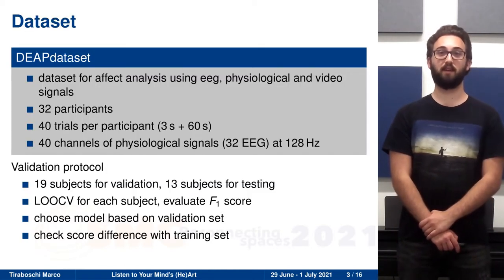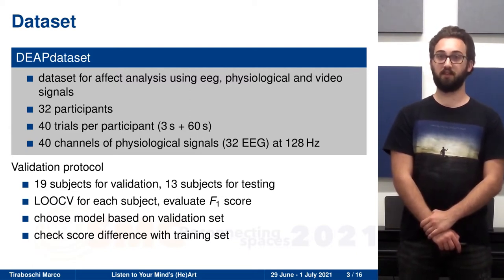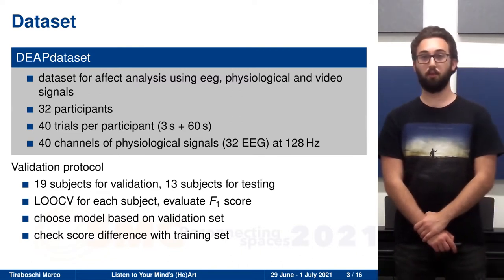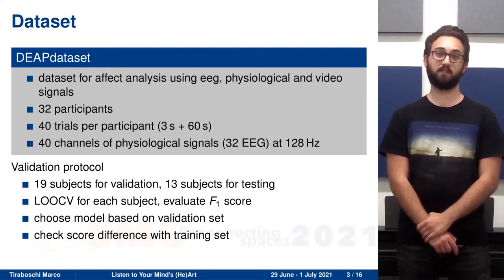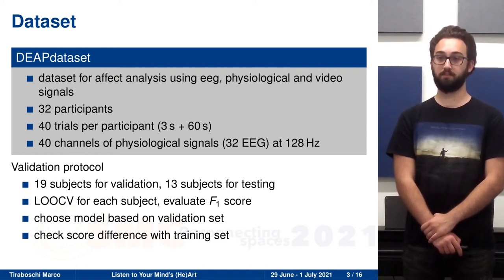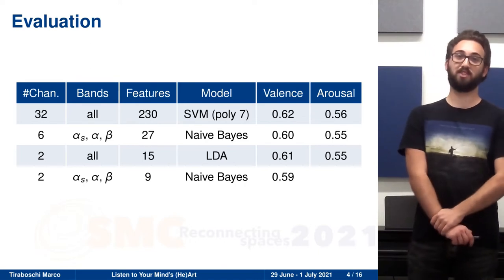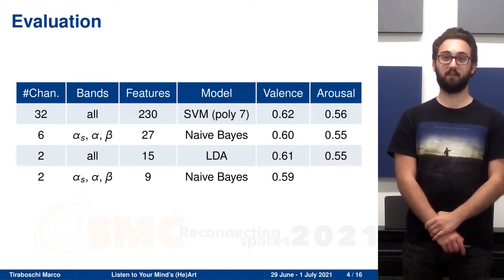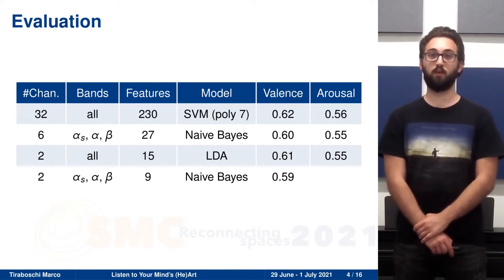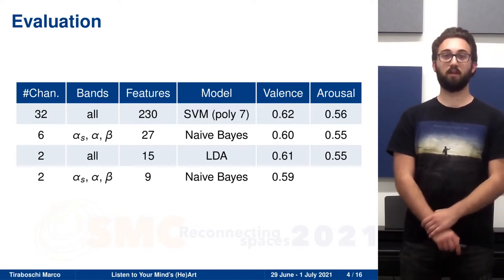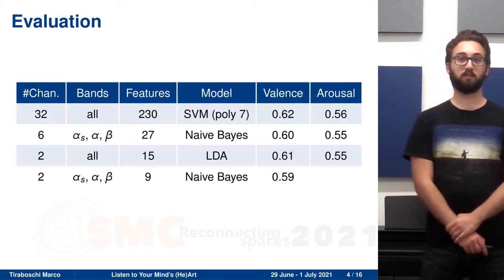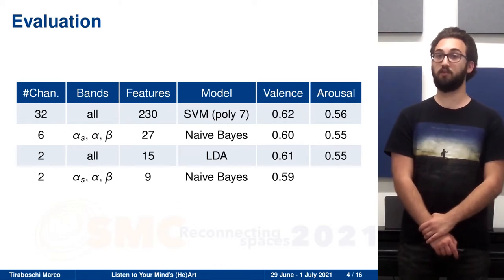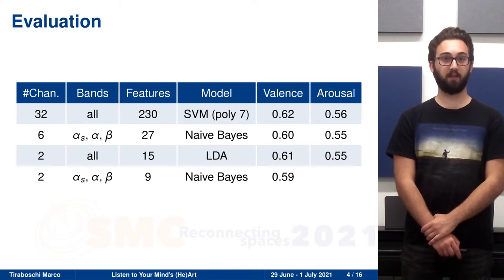We used the DEAP dataset to benchmark several machine learning algorithms from the state of the art. We divided the dataset in two parts. We used the first part to determine which algorithm worked best. We used the second part to evaluate how well the algorithm worked. At the beginning, we used all 32 EEG channels available in the DEAP dataset. And we found out that with a support vector machine with a polynomial kernel, we found similar results as the one described in the DEAP dataset paper. But then we asked ourselves, can't we use fewer than 32 channels for the classification? Using fewer channels means that we can have an EEG headset with fewer electrodes. It means that the EEG headset is cheaper and quicker to install.